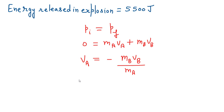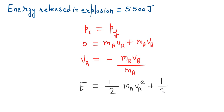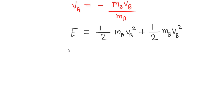The final kinetic energy of the two pieces is given as: E equals one-half m_a v_a squared plus one-half m_b v_b squared. We now substitute 1.5 m_b for m_a and two-thirds v_b for v_a.